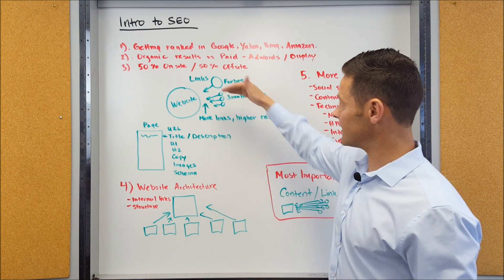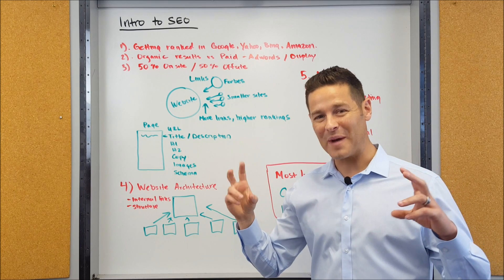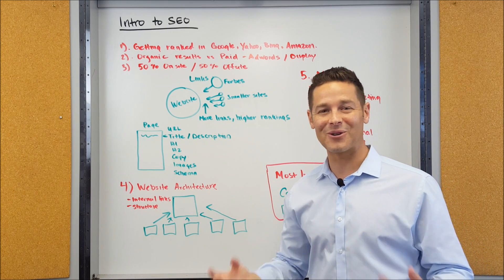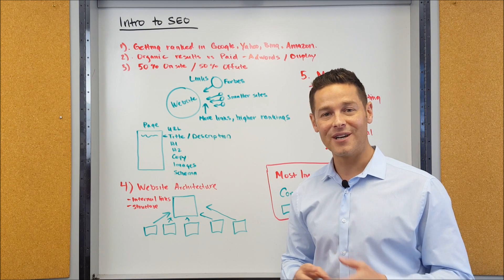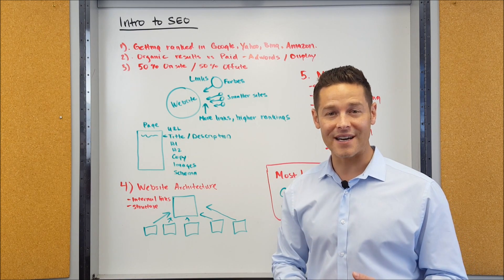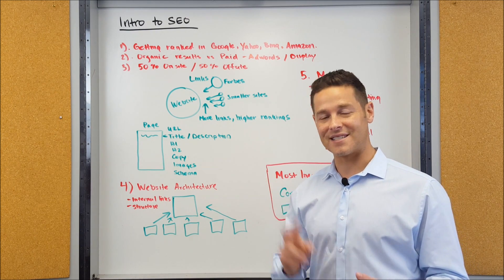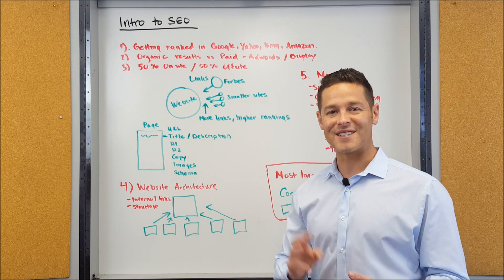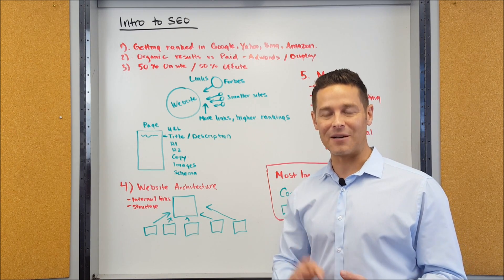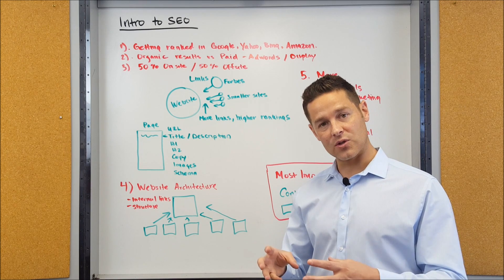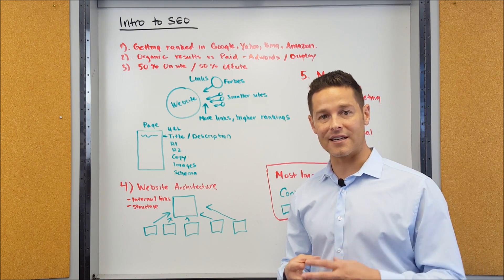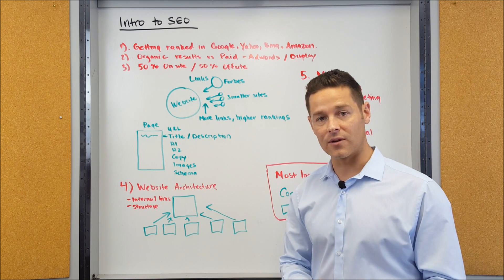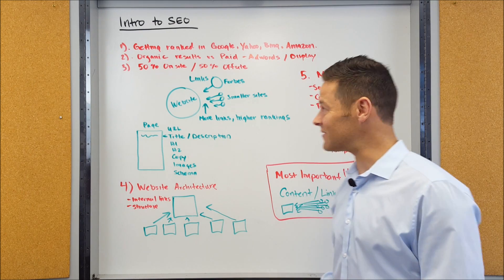A link from a site like Forbes is going to be much more powerful than smaller sites. So you want to make sure that you get links from what we call high domain authority websites. There's a lot of great tools out there that will let you determine what are the most powerful. Some of those being Moz Open Site Explorer, another one being SEMrush, another one being Majestic SEO, another one being Ahrefs. You can look at those tools, put your competitors in, see where they're getting links, and then you can get links on your own.